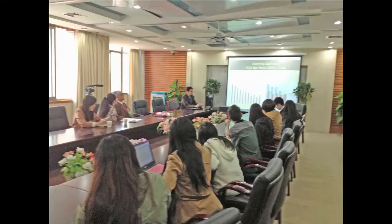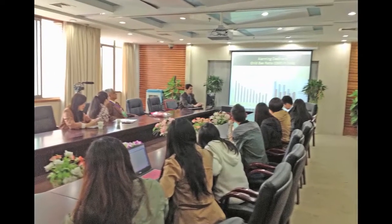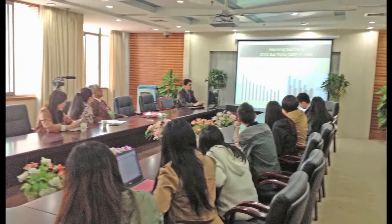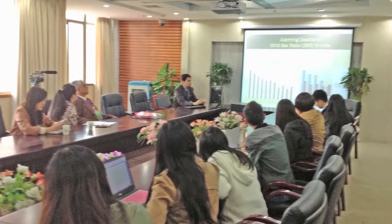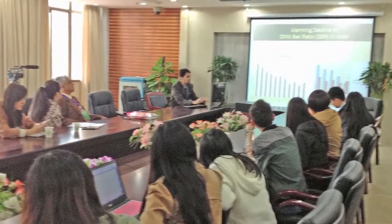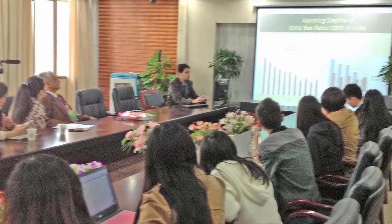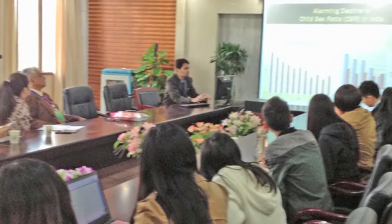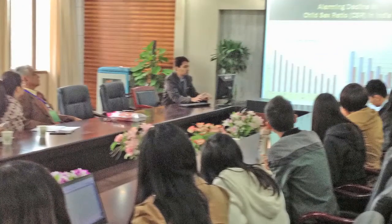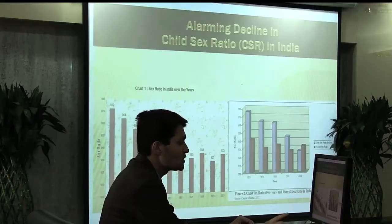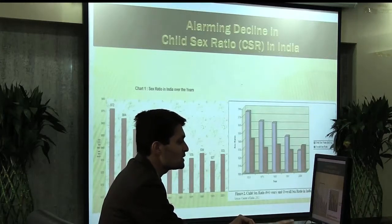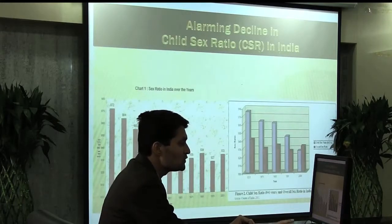In the next graph, we compare the child sex ratio and the overall sex ratio in India. The pink colored bar diagrams represent the overall sex ratio in India, which is fluctuating. Whereas the blue colored bar diagrams represent the child sex ratio in India, which is continuously on the decline from 1951 to 2001 — over a 50-year period.